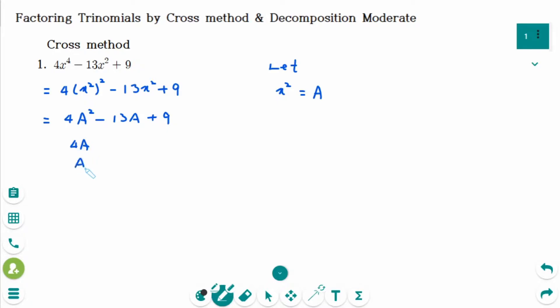4A times A makes 4A squared. Minus 9 times minus 1 makes 9. When you use cross multiplication, it becomes minus 9A. This is minus 4A. Combined together minus 13A, which is the middle term.